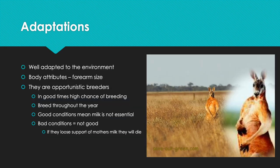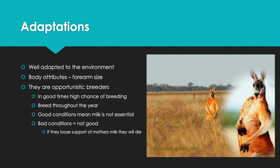Kangaroo reproduction patterns vary according to whether their territory is experiencing good times, bad times, or drought. They are well adapted to their environment. Physical attributes such as forearm or bicep size serve as mating adaptations — the buff alpha male leads the pack and females prefer to mate with him. Kangaroos are opportunistic breeders: in good conditions, there is a high chance of breeding throughout the year.